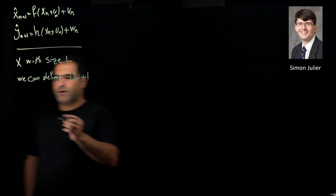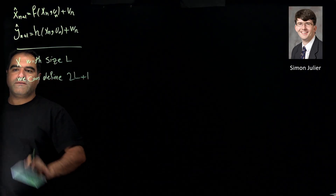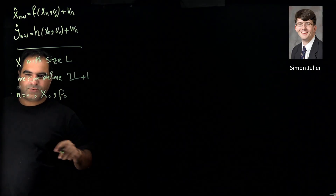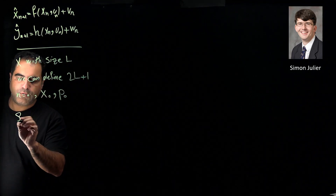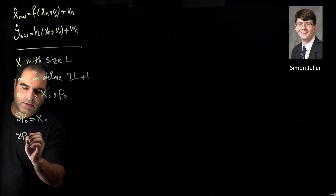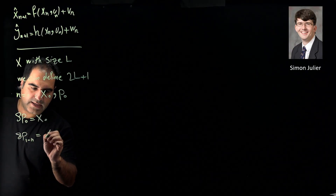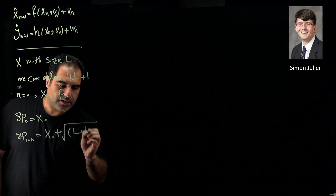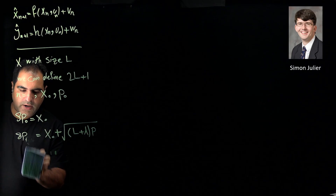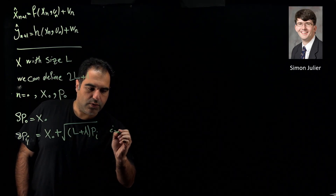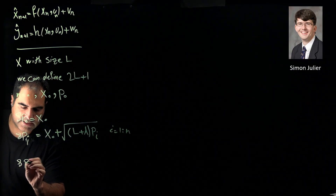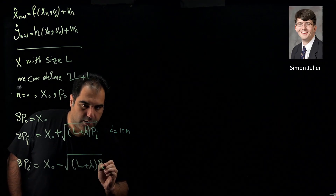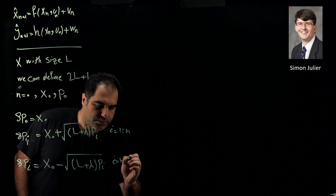What are these sigma points? If we call them SP, assume at the beginning of the Kalman filter process where n equals zero, and we have x_0 and P_0 as our prior knowledge. The first sigma point SP_0 is x_0. Sigma points SP_1 to SP_n equal x_0 plus the square root of (l plus lambda) times P, for i equal to 1 to n. And SP_{n+1} to SP_{2n} equal x_0 minus the square root of (l plus lambda) times P, for i equal to n up to 2n.